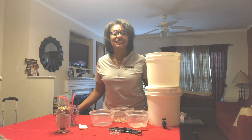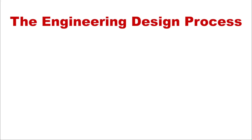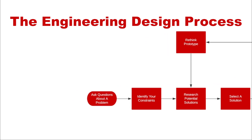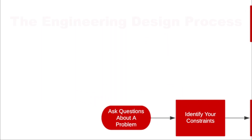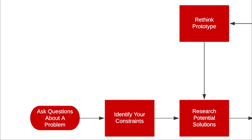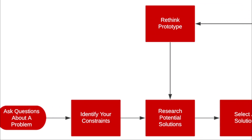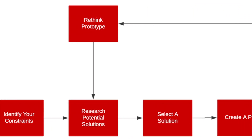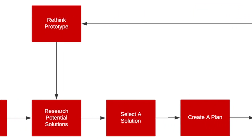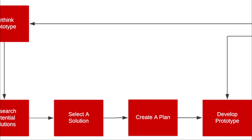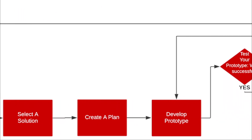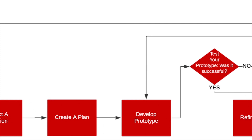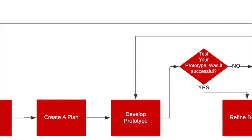Engineers use the engineering design process to solve problems in the world. The engineering design process will provide a way for you to ask questions about the problem, identify constraints, research different solutions, imagine and select a proposed solution, create a plan with a detailed diagram, and outline steps, procedures, and selected materials.